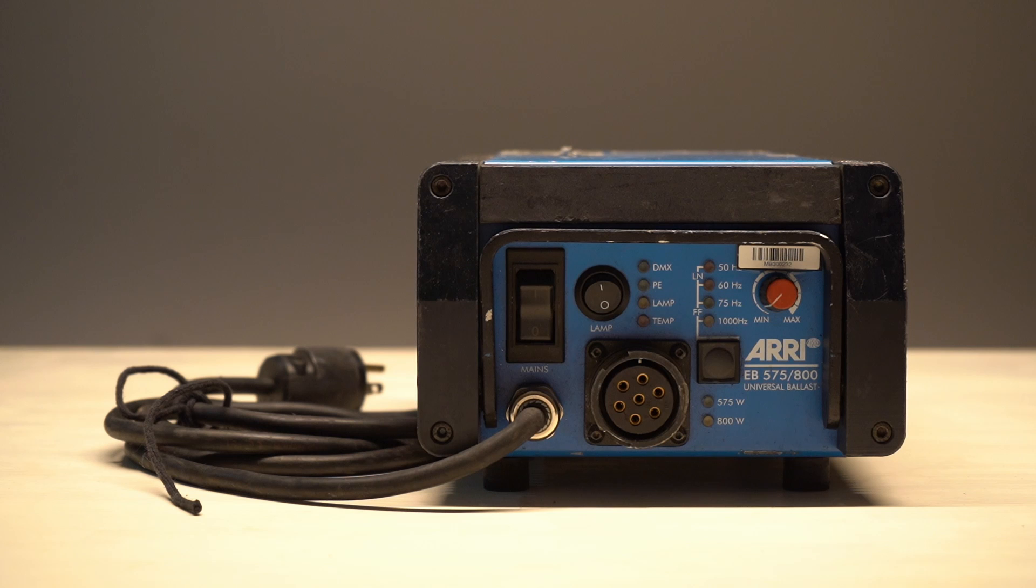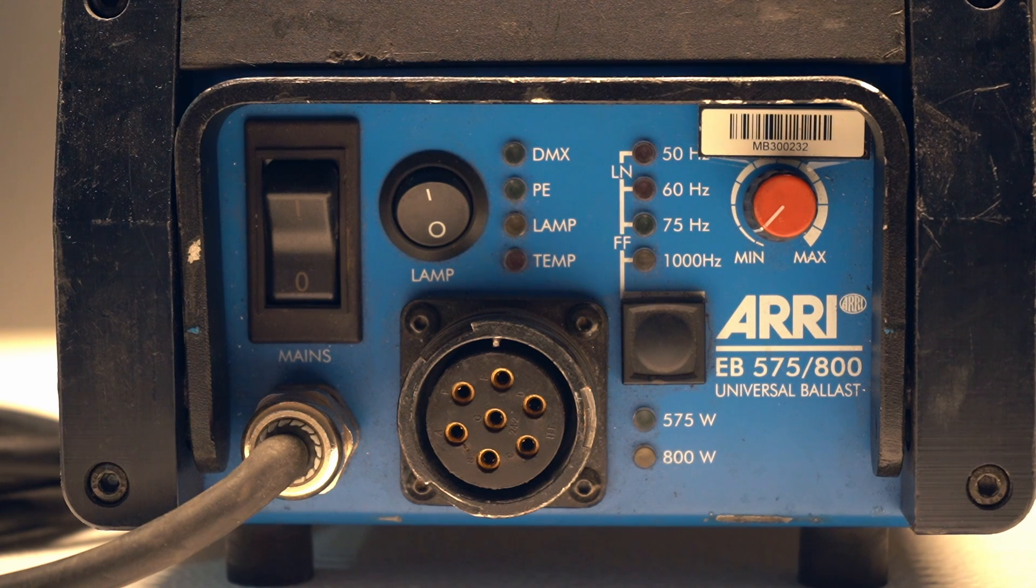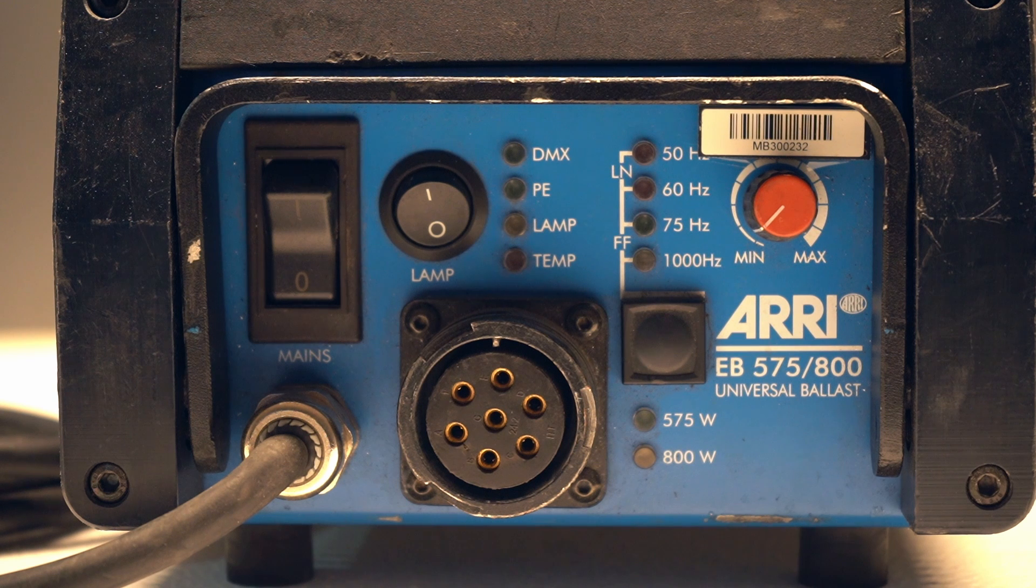Now let's look at the different buttons and indicators we have on the ballast. There is the ballast switch, the lamp switch, the light indicator, the frequency indicator, the frequency button, the intensity knob, and the wattage indicator.